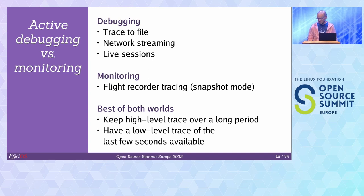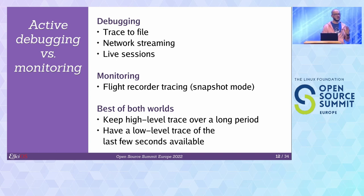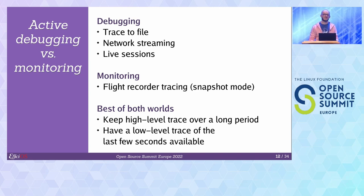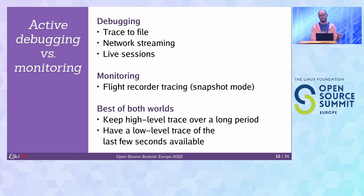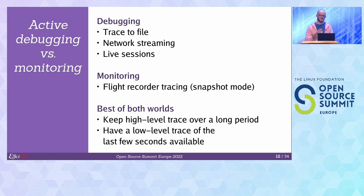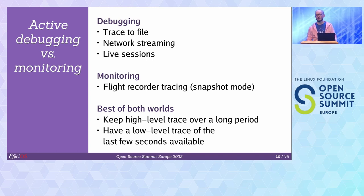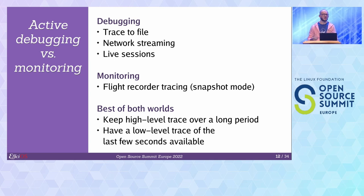We're seeing more people mixing and matching approaches — keeping a high level of trace over a long period, taking snapshots, and in more involved cases using trace rotation to ship trace archives off-site for analysis or process them on the target. Another pattern is snapshot-based profiling, where people take periodical snapshots of the in-memory ring buffers, analyze them over thousands of machines, and extract patterns about what's going on everywhere.